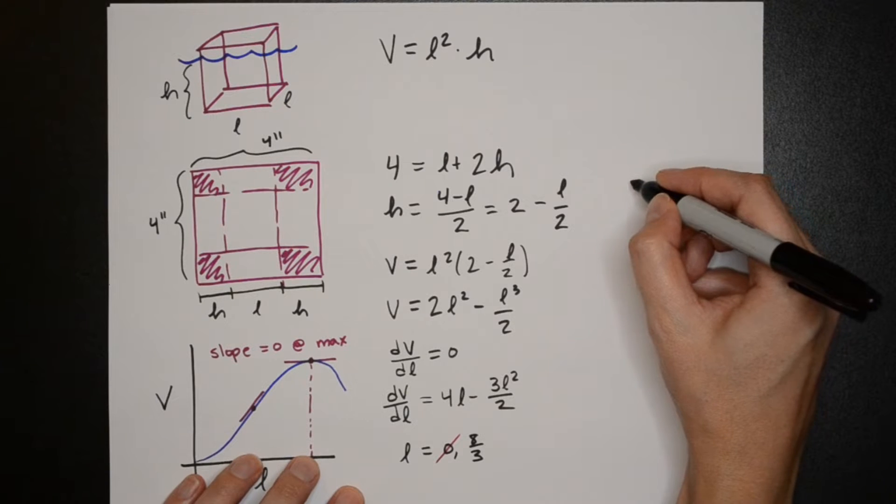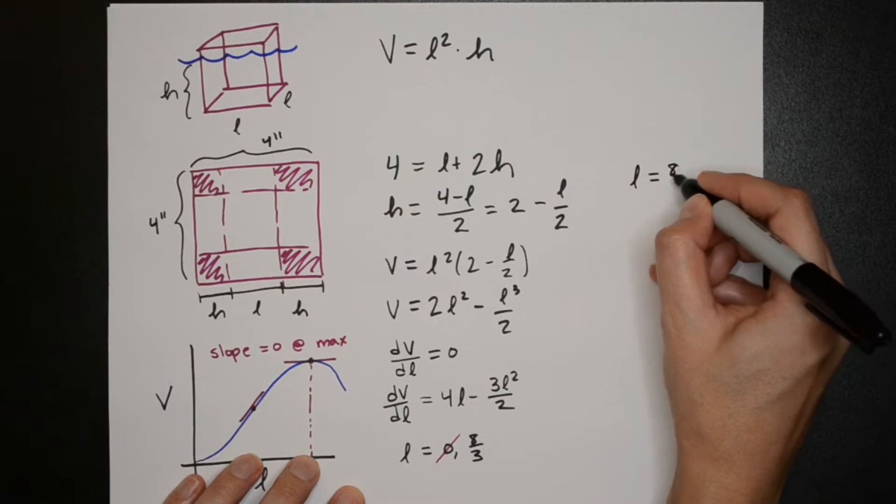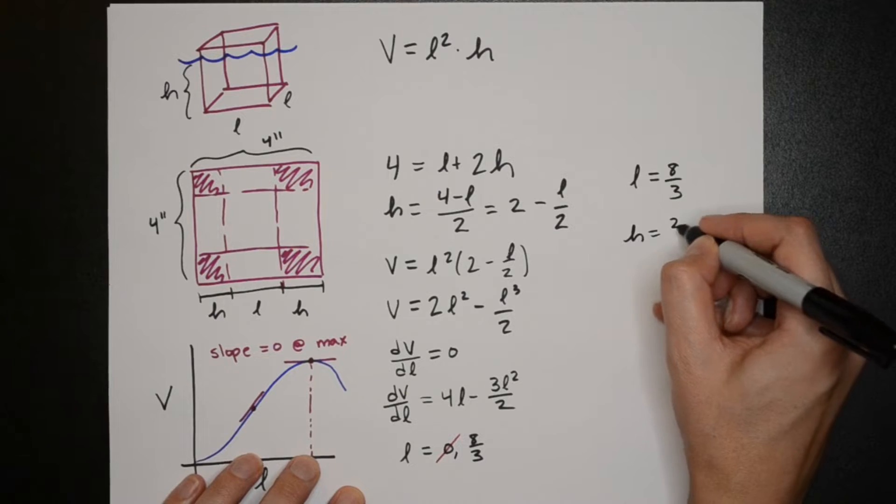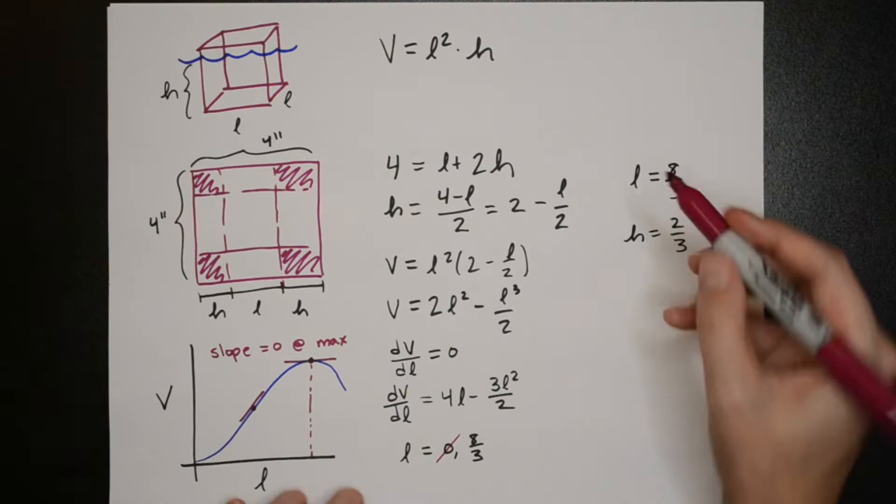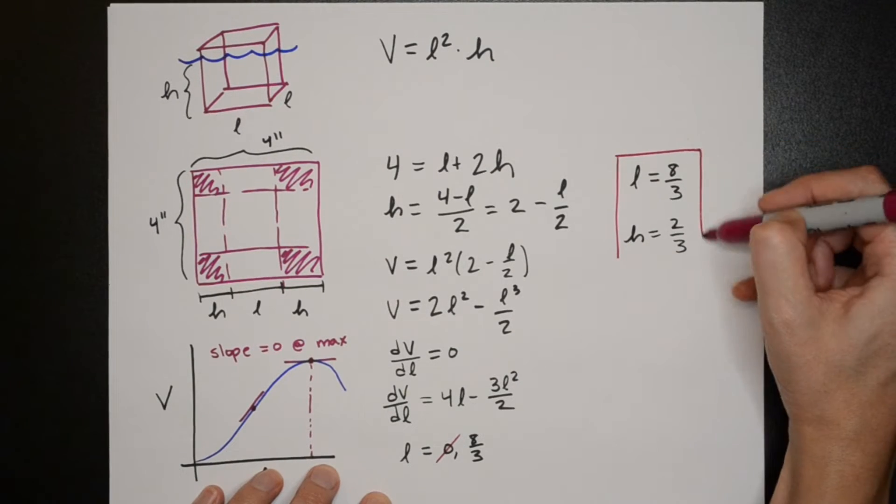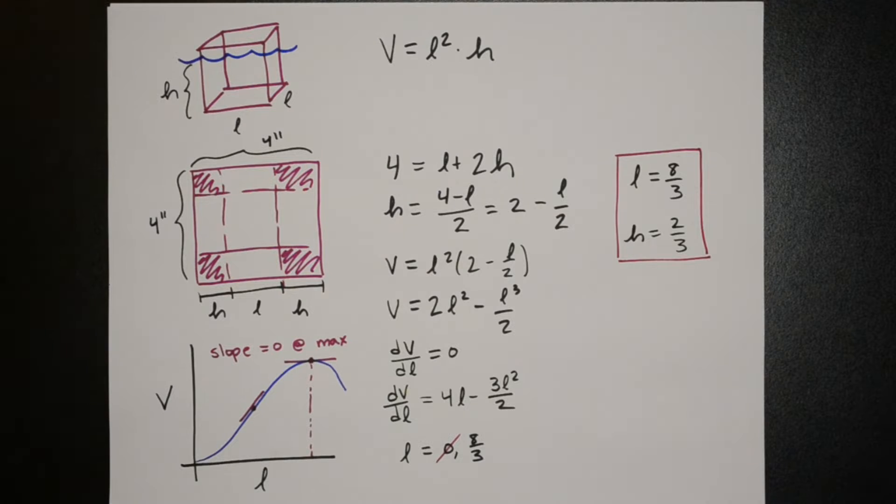We can plug eight thirds back into our second equation to solve for the height then we can use both of these values to solve for the volume which comes out to 4.74 inches cubed.